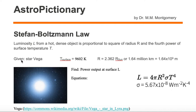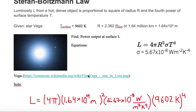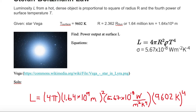Now that we have our given values and our equation, let's solve for luminosity. We write: L equals 4π times (1.64 times 10 to the 9th meters) squared, times (5.67 times 10 to the minus 8 watts per meter squared per Kelvin to the fourth), times (9602 Kelvin) to the fourth.